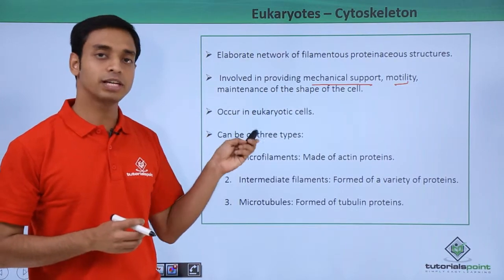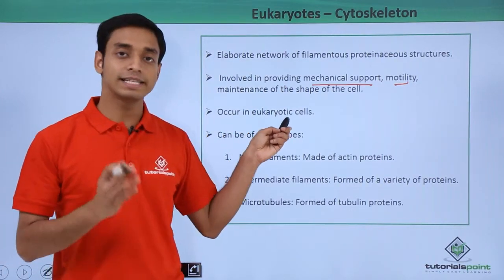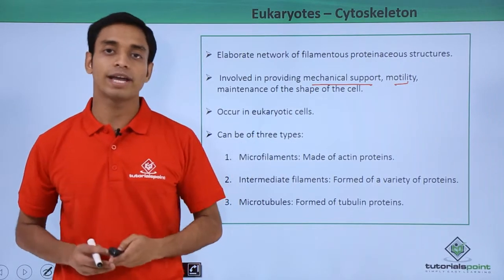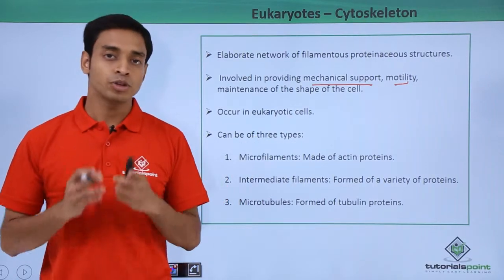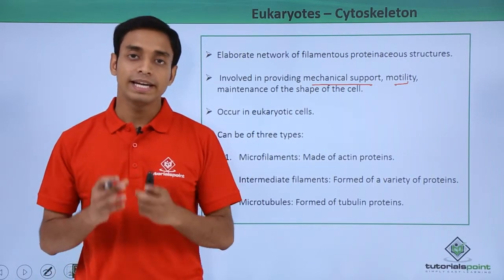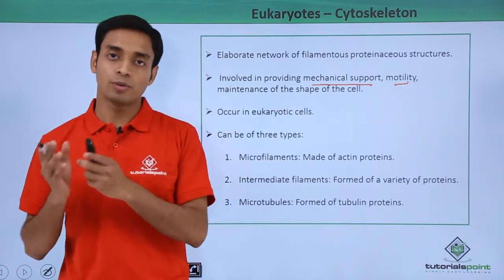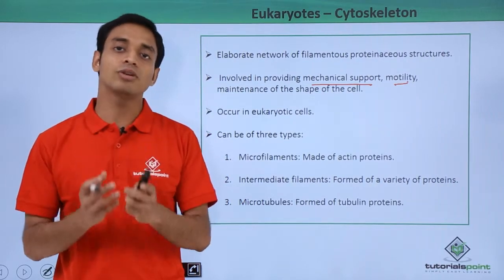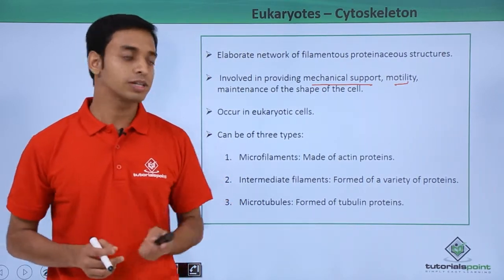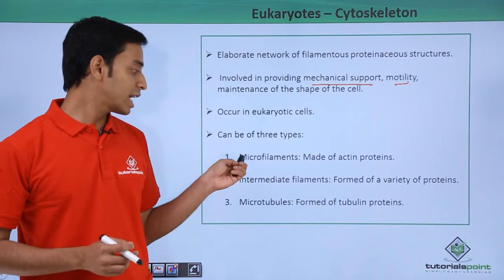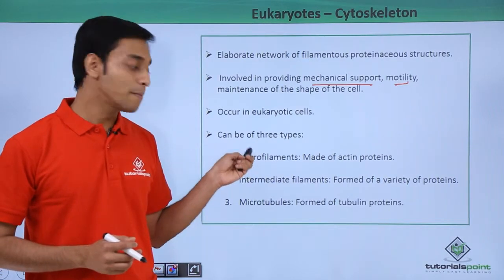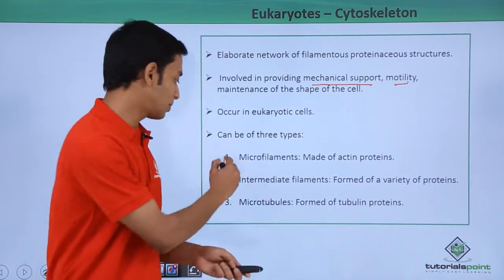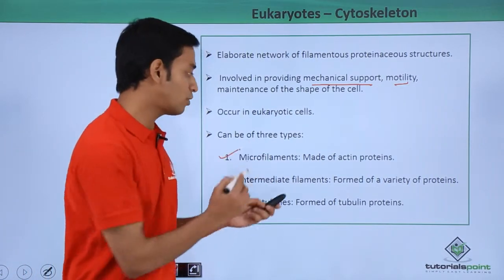The cytoskeleton is specifically present in eukaryotic cells; it is absent in prokaryotic cells. The cytoskeleton is formed of proteins and can be of three different types. The first type is known as microfilaments. These are formed by specific proteins known as actin proteins.